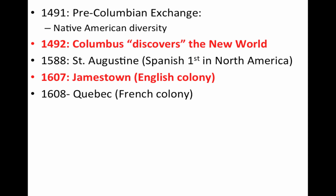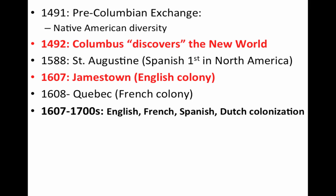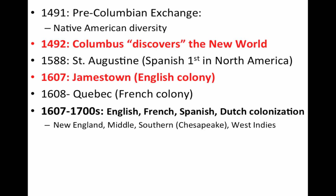A year later, the French will be establishing their own colony at Quebec. Throughout 1607 to the 1700s, it's really about colonization. You have the English, the French, the Spanish, and the Dutch colonizing the Western Hemisphere. English colonization is going to be very regional — each area characterized by its region: the New England colonies, the Middle colonies, the Southern colonies, including the Chesapeake region, and the West Indies as well.